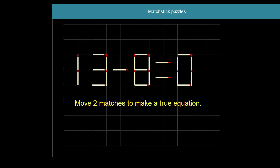First one. And second one. And there we have it. Eight minus eight equals zero. That's a true equation. One more.